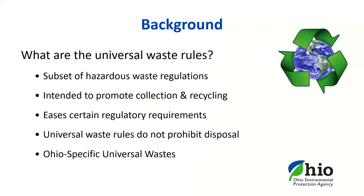The universal waste rules are intended to promote recycling, as well as proper disposal by easing certain regulatory requirements, such as waste evaluation and manifesting. When managing these wastes under the universal waste rules, a generator does not need to evaluate them, and they are not counted when determining the quantity of hazardous waste generated for the purposes of determining the generator's status. Currently, Ohio has four categories of universal wastes recognized nationwide, and three additional types that are Ohio-specific universal wastes. Lamps, suspended or recalled pesticides, mercury-containing devices, and batteries are recognized nationwide. Antifreeze, aerosol containers, and paint and paint-related wastes are the Ohio-specific universal wastes.